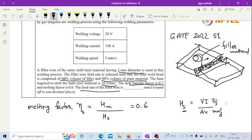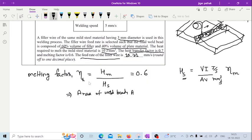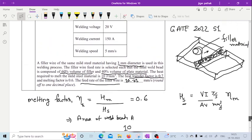You need to multiply this heat with heat transfer factor. So we have all this data here like the voltage and current and this velocity. So here if you use all this given data, then you will be able to find the area of the weld bead.